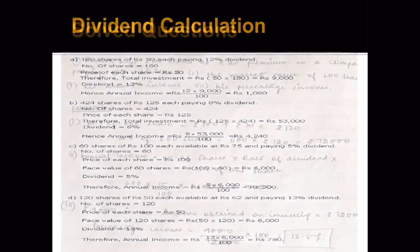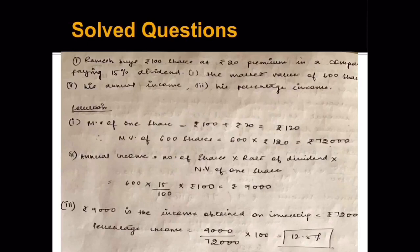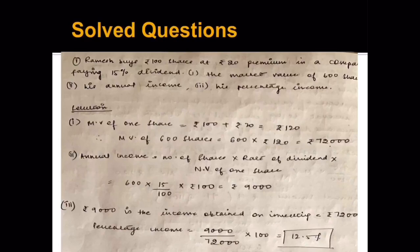Now let us move to solved questions. Question 1: Ramesh buys rupees 100 shares at rupees 20 premium. Face value is rupees 100, and at premium means purchased from the market at a higher price by 20, so market value equals 100 plus 20, that is 120. The dividend is 15 percent. First, find the market value of 600 shares: 600 into 120 equals rupees 72,000.